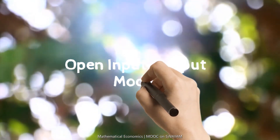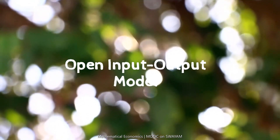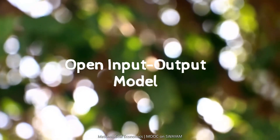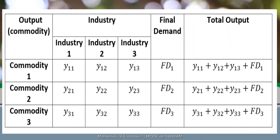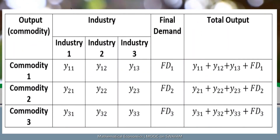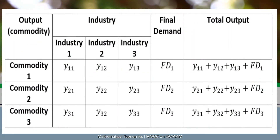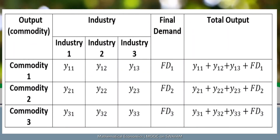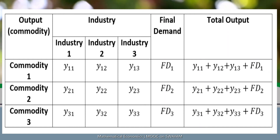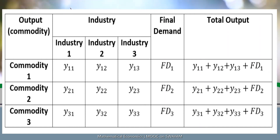The open input-output table looks like this. Could you spot the difference? Apart from the intermediate demand, there is a column of final demand.